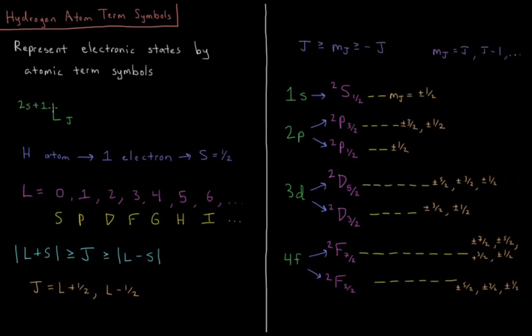Which is 2 is the multiplicity of a single electron, because it can only be spin up or spin down. So for our hydrogen atom, s being 1 half, we're always going to have a 2 up here, which is a doublet state.